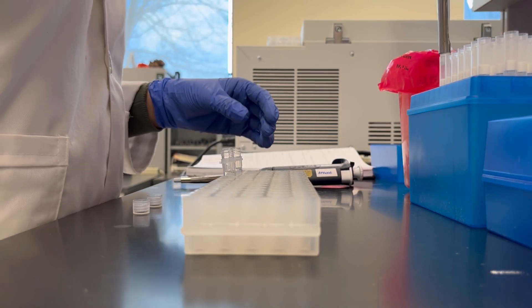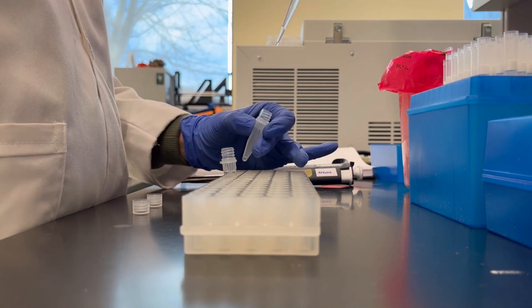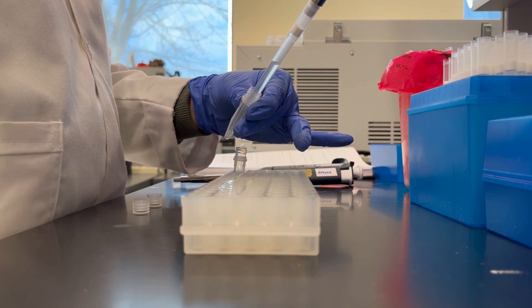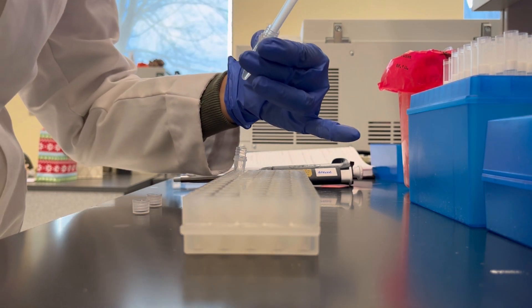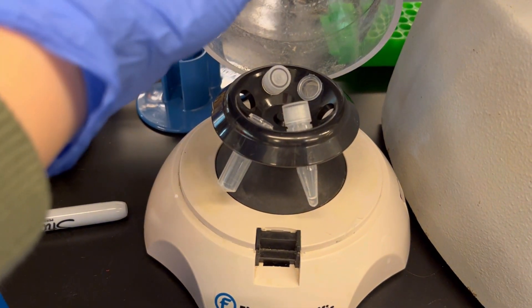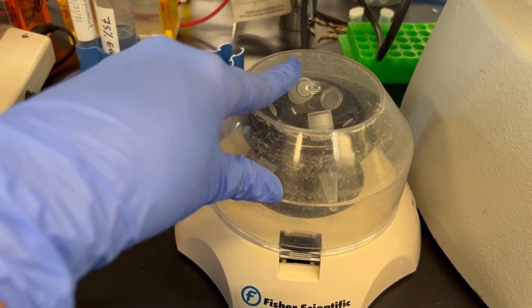After centrifugation, discard the ethanol. Spin the tubes down again to get rid of ethanol as much as possible.